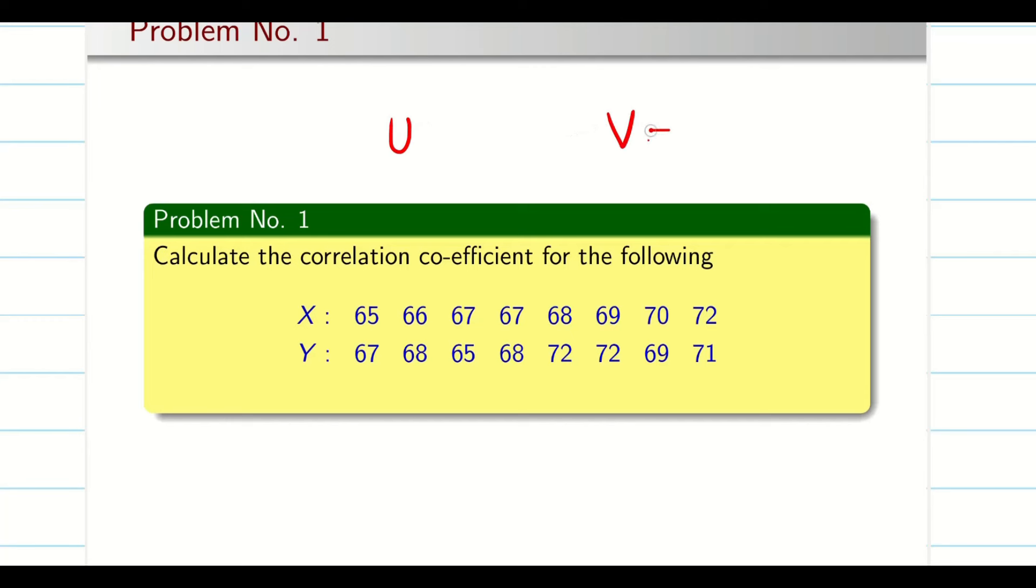So what they did, they introduced a new variable u and v instead of x and y. Since the correlation does not change when you do addition or subtraction or division and multiplication of the data, they would take x minus 65 or any number close to x variables such that the data should be very small.